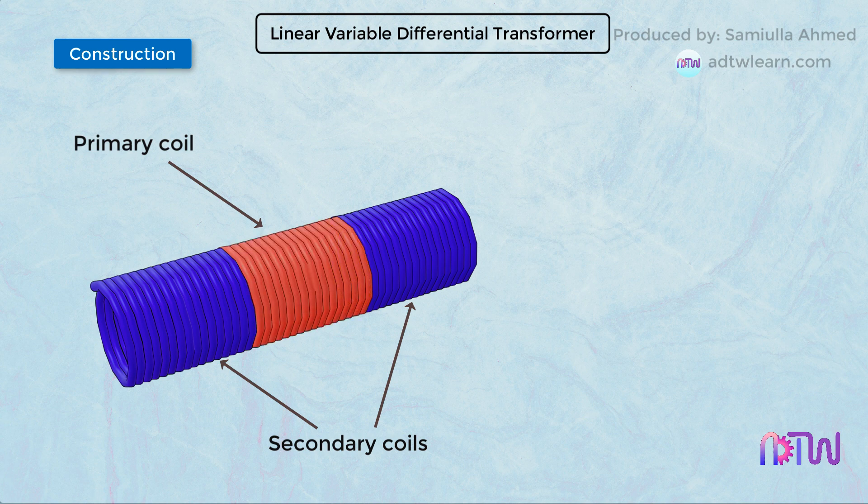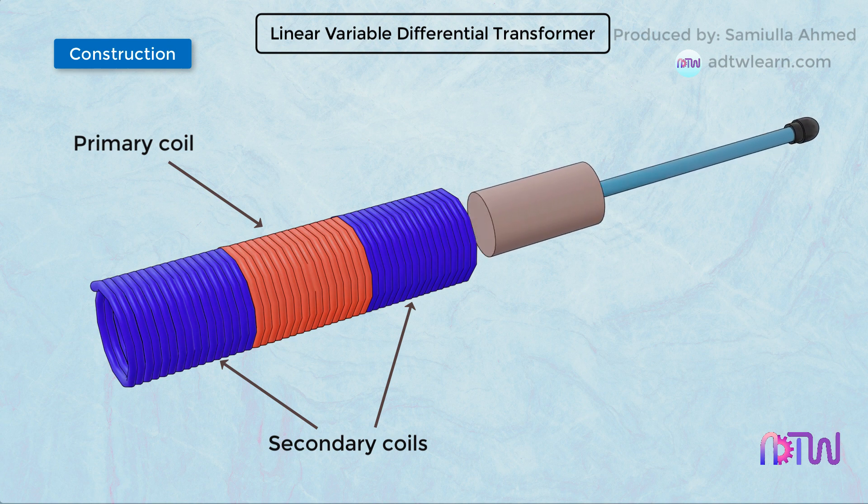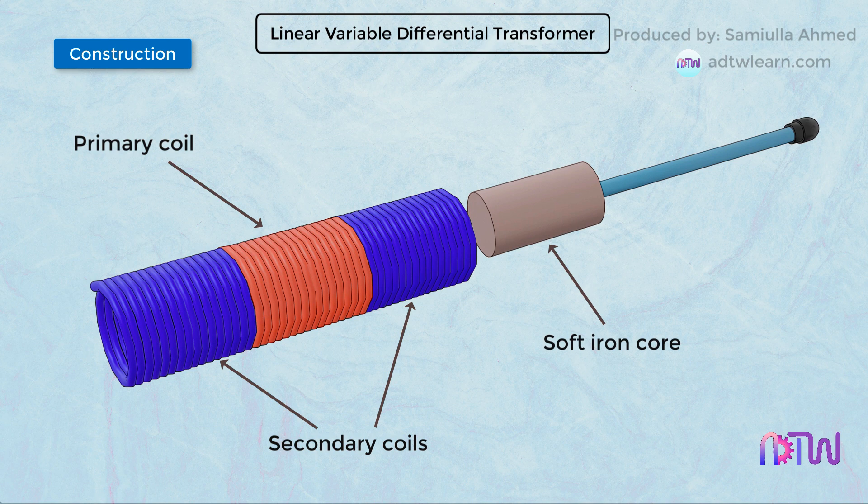A movable soft iron core slides within the hollow space of the cylindrical transformer and therefore affects the magnetic coupling between the primary and secondary coils.